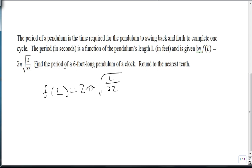We want to find the period of a 6 foot long pendulum. Well, here's our input, L equals 6. We'll take f of 6 and get 2 pi times the square root of 6 divided by 32